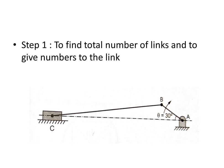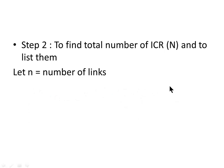First, we have to count the total number of links. Link number 1 is the fixed link — whatever is fixed in the mechanism, we give it link number 1. Link number 2 will be the crank, link number 3 will be the connecting rod, and link number 4 will be the piston. So total links in the mechanism are 4.